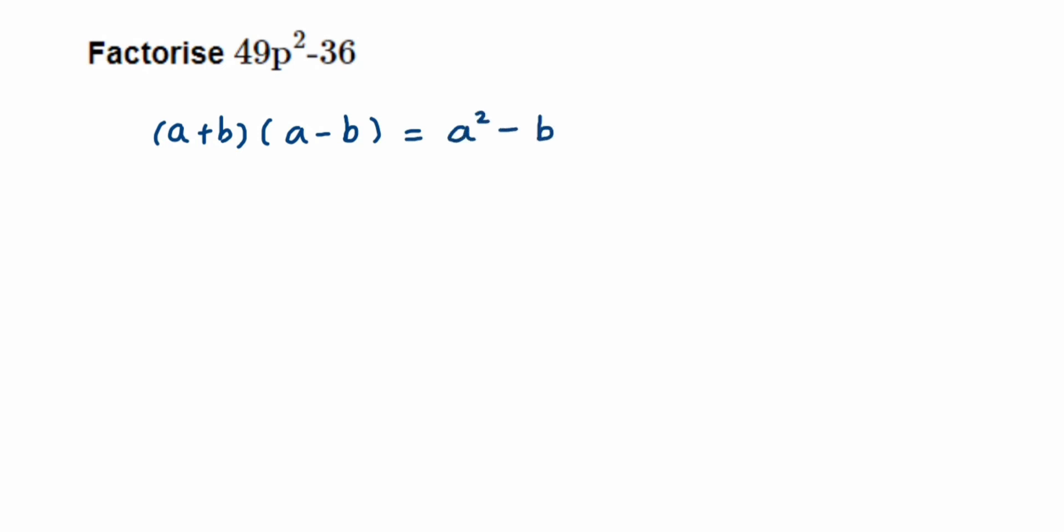Now here we have this side in the question - 49p² - 36. This part is given to us, and we have to write it in factored form. But what is a and what is b? In the question we have 49p², and in the identity we have a².